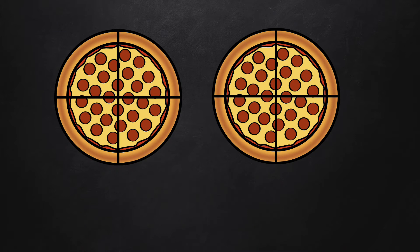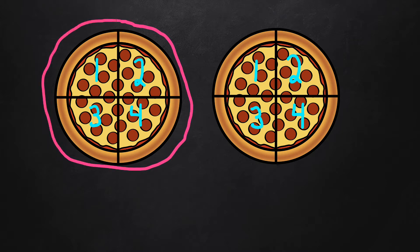First, let us look at how to name the fraction of objects that are more than one whole. Here we have two pizzas. Each pizza is cut or partitioned into four slices. When naming a fraction beyond a whole, we look at one whole to name the fraction. Because both pizzas are cut into four slices each, we can say that these two pizzas are partitioned into fourths.